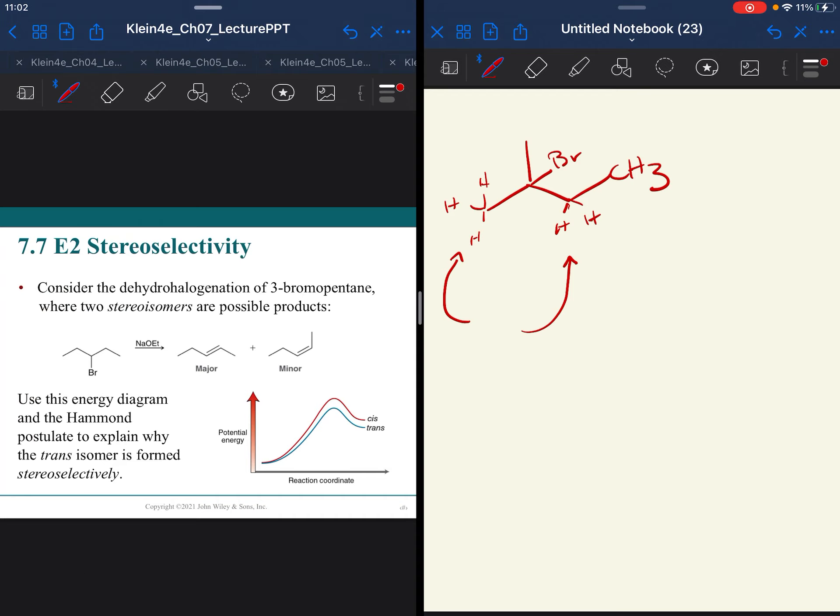The stereoselectivity, there are several slides on this. I am not going to ask you to determine this. Trans stereo isomers tend to be more stable than cis. That's a good thing to know.